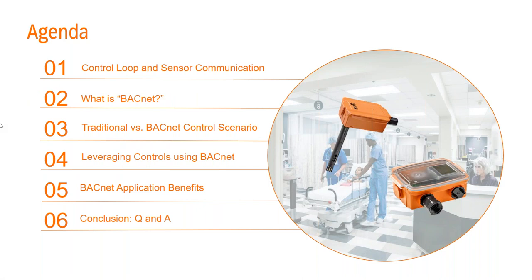Jumping right into this, I wanted to give you a quick idea of what we will be speaking about today. We're going to start off looking at a very generic HVAC control loop specific to sensors, then go into a high level overview on what exactly BACnet actually is. DJ will take over and go into the details behind installation and wiring BACnet sensors, specifically comparing BACnet units to a more traditional analog type sensor. DJ will then touch on leveraging this communication and discuss how this can benefit your system both physically and monetarily, and I'll close discussing the high level benefits BACnet brings to your application, followed by a Q&A session.